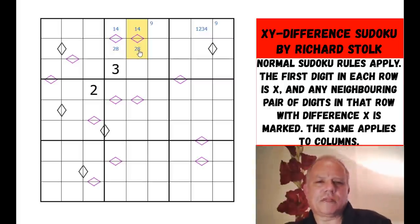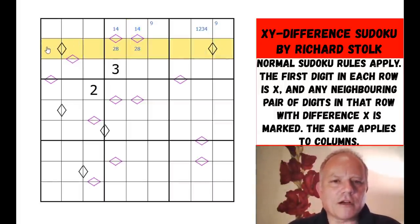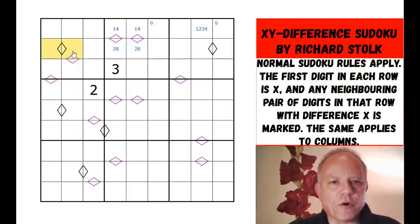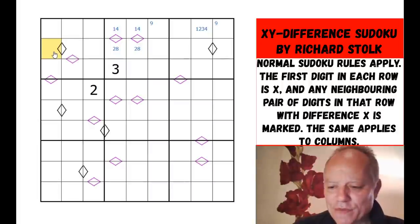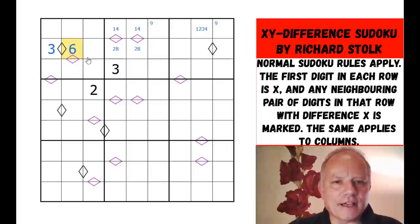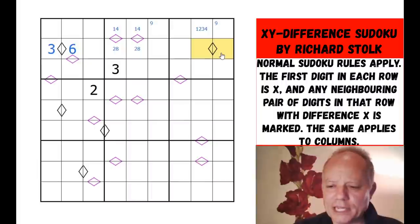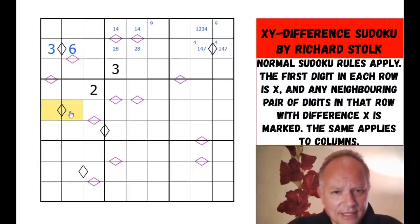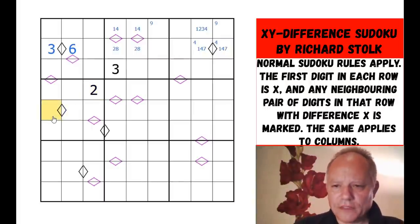This row can't have a two or eight anywhere except those two cells. The double constraint applies here again — it can't be one-two because the two is already placed, can't be two-four or four-eight because of the two and eight there. So this must begin with three-six. That's so neat — a difference of three in this row. The remaining pair in the column also can't be three-six or one-two, so it has to be four-eight.